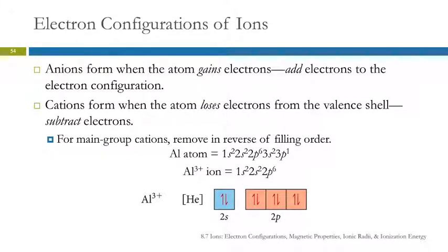Electron configurations of ions. Anions form when atoms gain electrons, so when writing an electron configuration for an anion — a negative ion — you have to add electrons to the electron configuration. For cations, you have to subtract electrons.